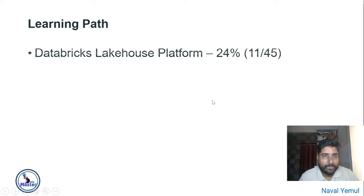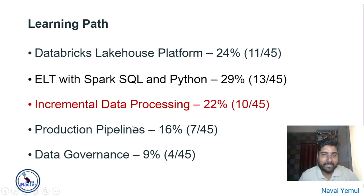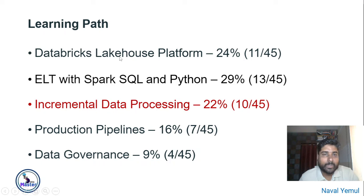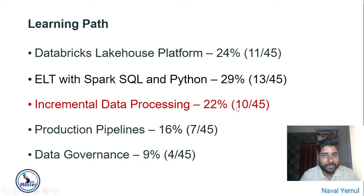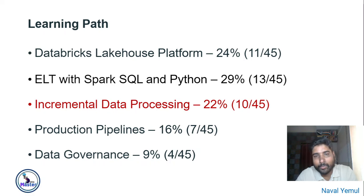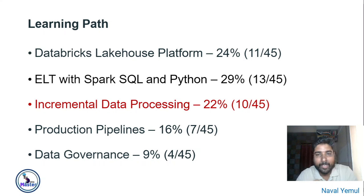Let me proceed. When you start preparing for the Databricks Data Engineering certification, there are five parts. I have already prepared part one and part two videos on the first part — Lakehouse Platform and ELT with Spark SQL and Python. Now in this video we are going to see about incremental data processing. There will be approximately 10 to 11 questions based on this. We need to know about Structured Streaming, Autoloader, and the Medallion Architecture.